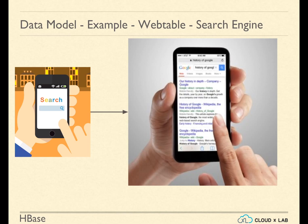On what basis are these results ordered? The options are relevance, how important a page is, the user's behavior, or all of the above. The answer is all of the above. To figure out how important a page is, Google assigns a page rank based on how many other websites are linking to a page. More websites linking to your page improves your page rank. Further, if more important websites with a better page rank are linking to your page, your page rank will be even better.